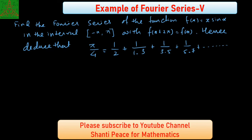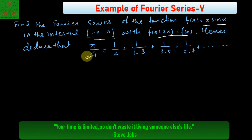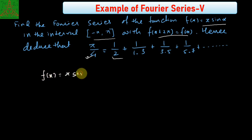Welcome to Sancti Peaceful Mathematics. In this video, we are discussing the Fourier series of the function f(x) = x·sin(x). This is a periodic function in the interval minus 5 to 5. And we have to find what is the value of 1·pi upon 4, which is in the form of the series. Here, the function f(x) = x·sin(x).